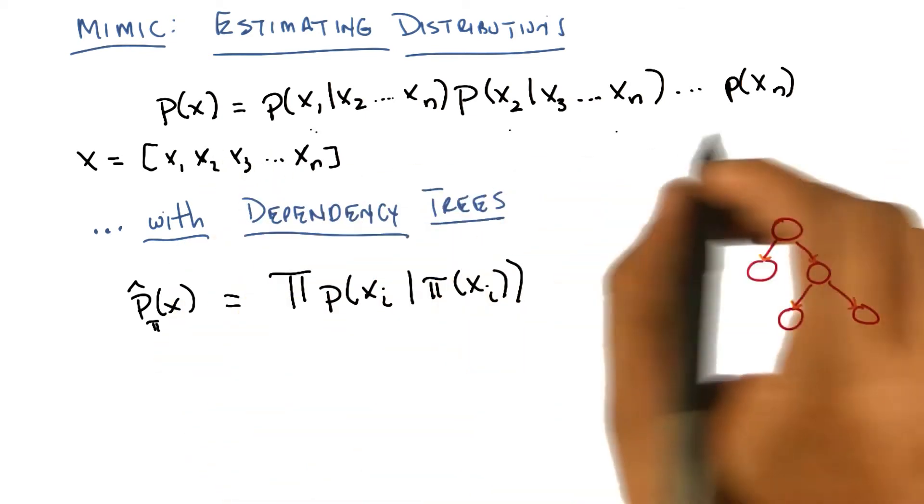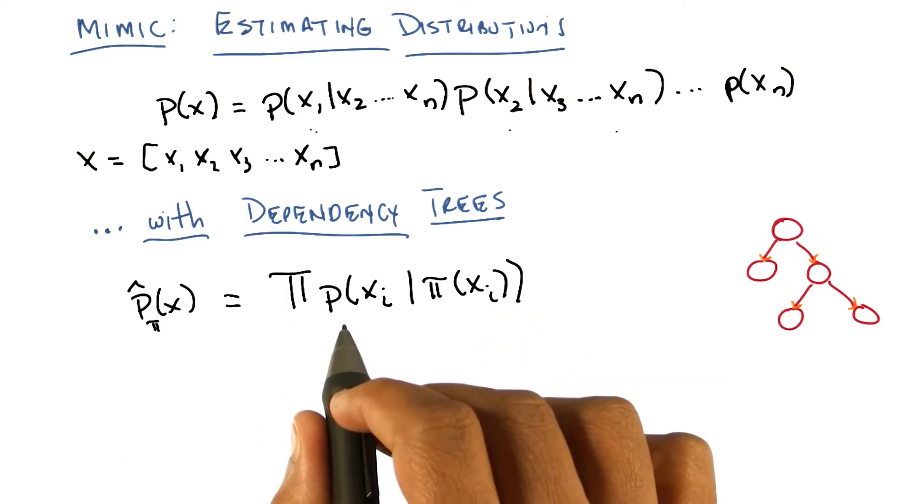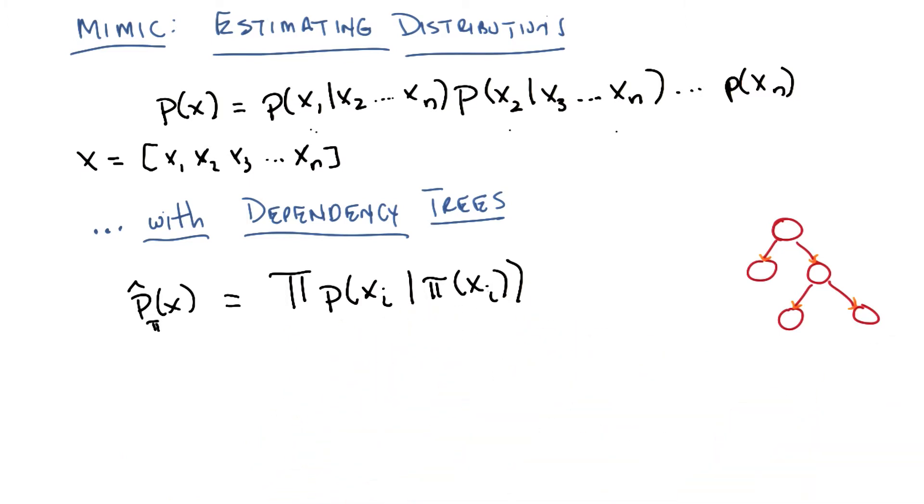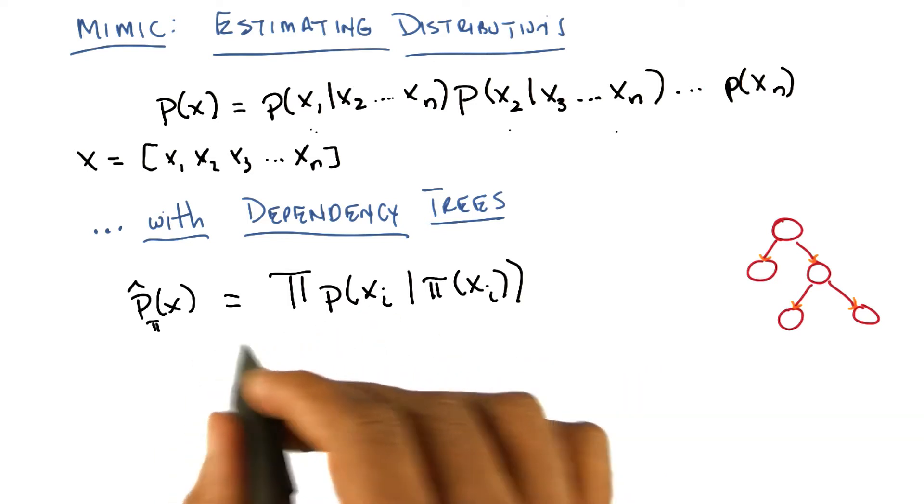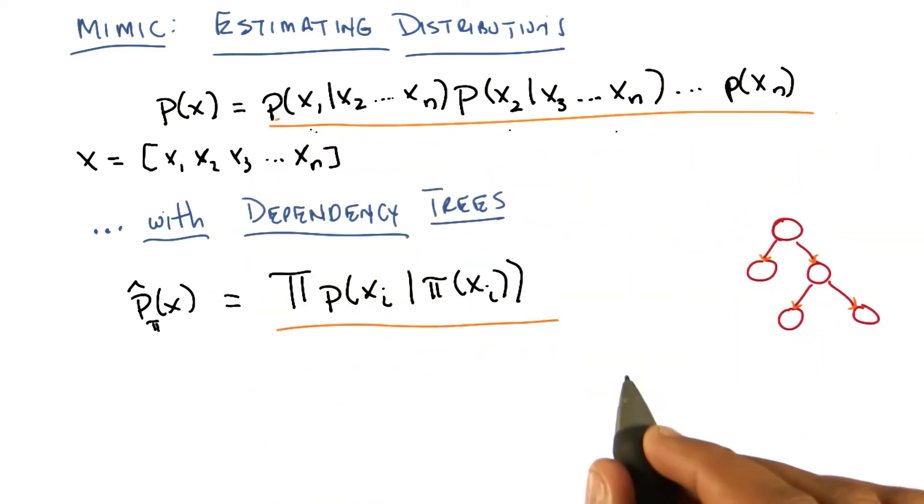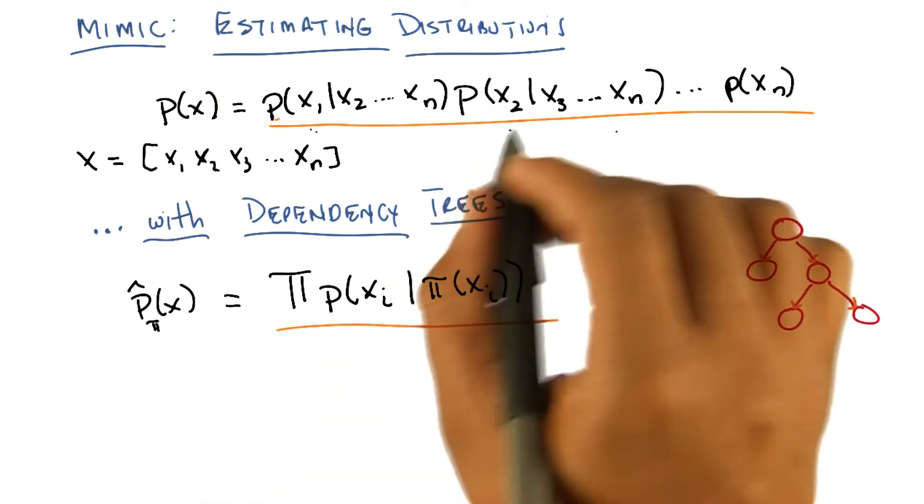So we can rewrite this joint distribution here now as a product over each of the features depending upon only its parent. I see. So the first capital pi there means product, and the second lowercase pi there means parent. Exactly. So when I compare this representation of a distribution, a dependency tree representation, versus the full joint, what nice properties do I get from doing it this way versus doing it that way?